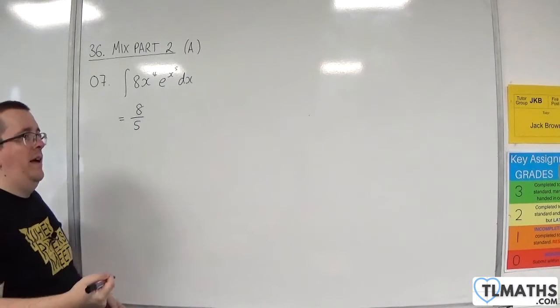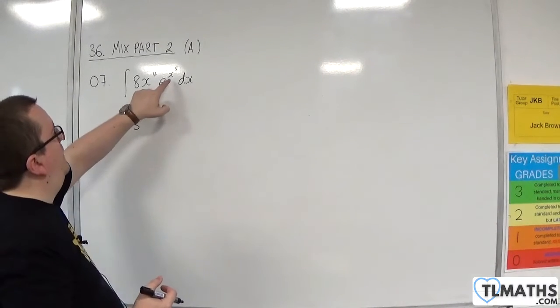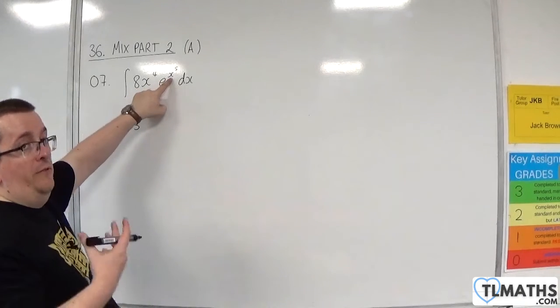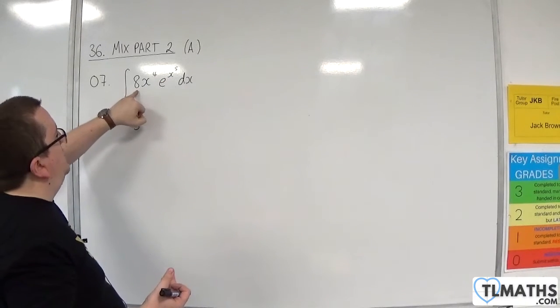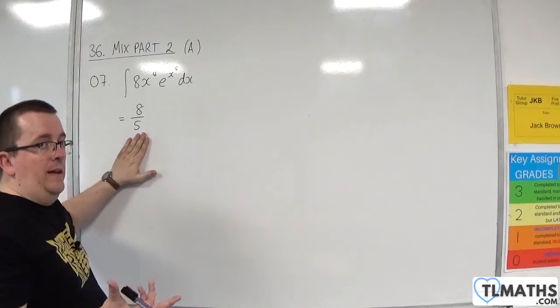OK, you can also see that as the coefficient of the x to the 4, when I differentiate, will be 5. So I just do 8 divided by the 5. That's how I can get that.